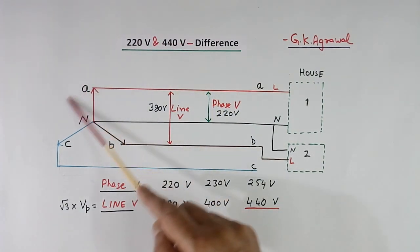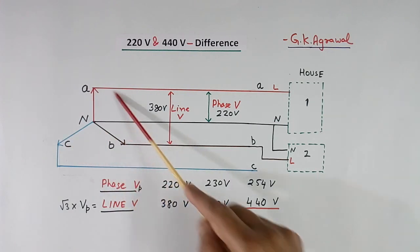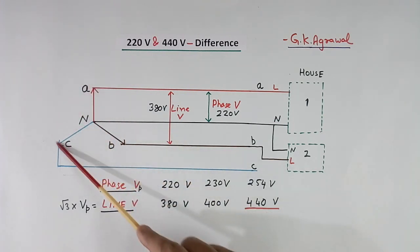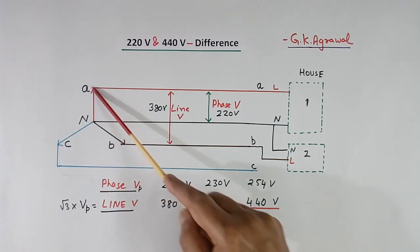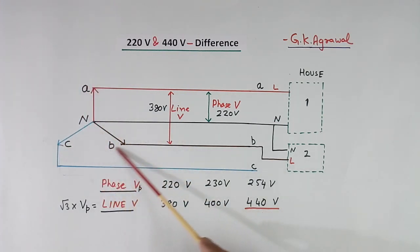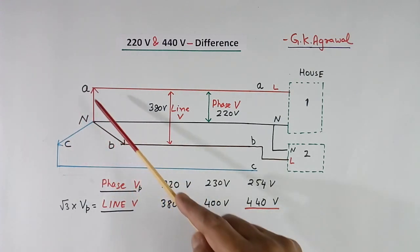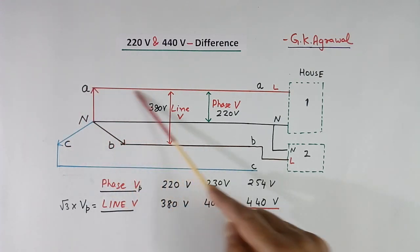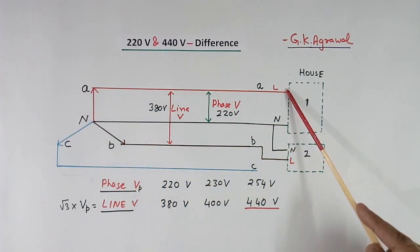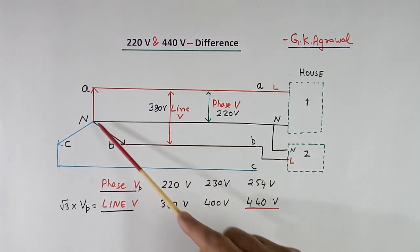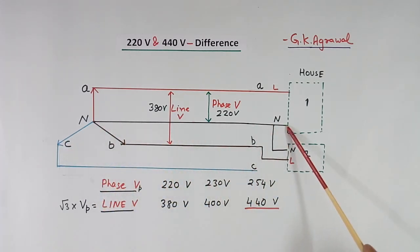Here I have shown one 3-phase supply. This is actually the secondary of the transformer in the substation. From there, 4 wires are coming: Line A, Line B, Line C, and neutral.